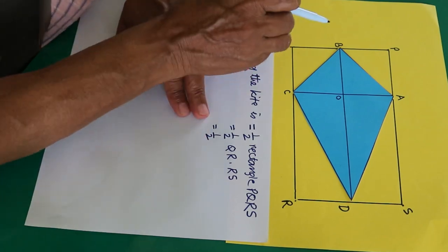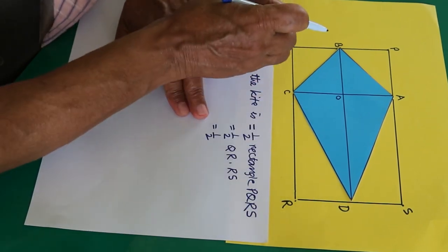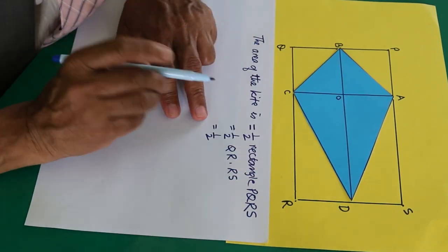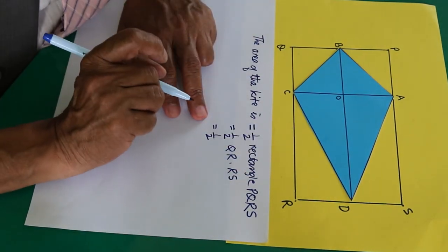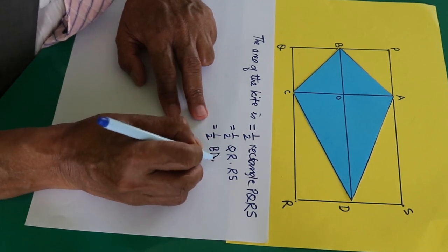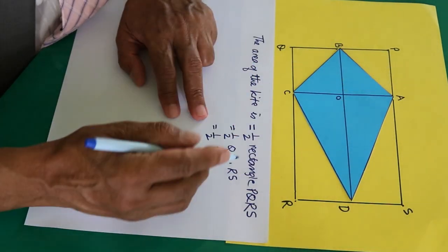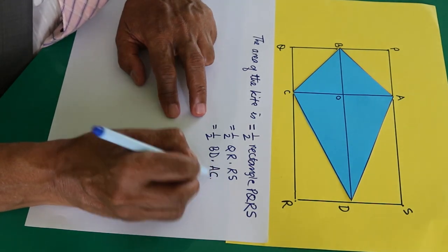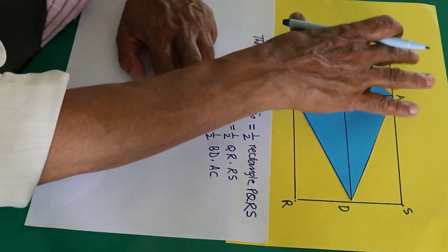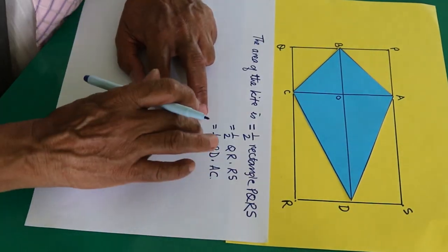This QR is equal to BD. We have drawn parallel lines from the midpoint of the rectangle. That's why this, this, and this are equal. So that is why this is equal to BD, and RS is equal to, likewise, AC. Because RS is perpendicular to this and that one is also perpendicular to this, and both of them are within the rectangle, they are equal.